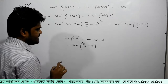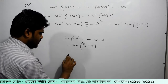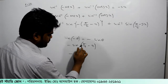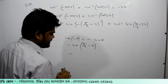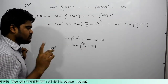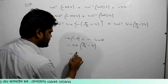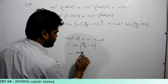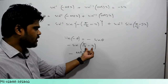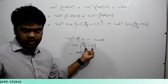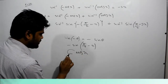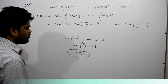We write sin 90, and since sin 90 equals 1, sin equals minus sin, cos equals x. This is the first quadrant, which is plus. So we write minus cos x.